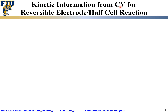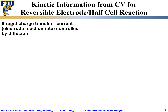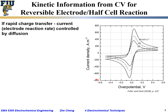With a CV curve, or cyclic voltammetry curve, for an electrode reaction or half-cell reaction, if it is reversible, we can sometimes get useful kinetic information. If we have rapid charge transfer — meaning the reaction is not controlled by activation — the current and the electrode reaction rate are controlled by diffusion, with no stirring in the solution.